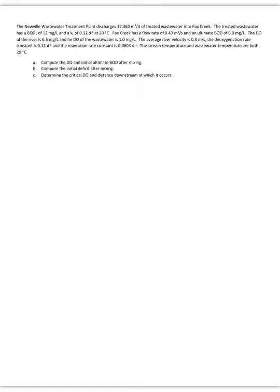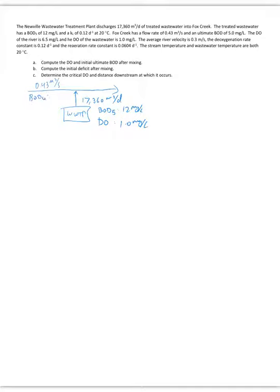Part A says: compute the DO and initial ultimate BOD after mixing. Both the wastewater and the river have some dissolved oxygen and some BOD, and they're going to mix together. We draw a sketch showing the river flow at 0.43 m³/s and the wastewater treatment plant discharging into the river. The plant has a BOD5 of 12 mg/L and a DO of 1.0 mg/L, while the stream has an ultimate BOD of 5 mg/L and a DO of 6.5 mg/L.